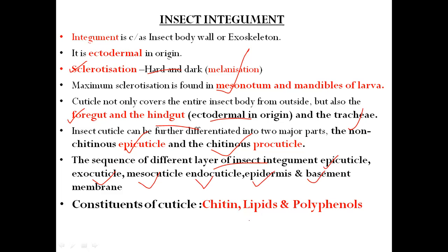The major constituents of the insect cuticle are chitin, lipids, and polyphenols. Chitin is a nitrogenous polysaccharide compound, chemically known as N-acetylglucosamine. Lipids and polyphenols are also major constituents of the insect integument.